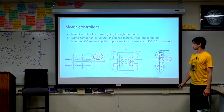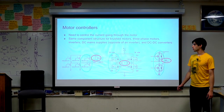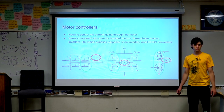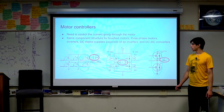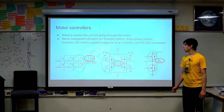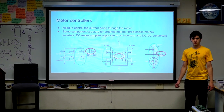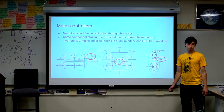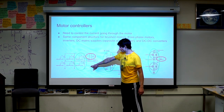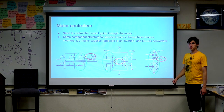Now, motor controllers. The basic idea is you have to control the electricity going through the motor. The same type of controller is used for brushed motors, three-phase brushless motors — like RC hobby stuff that's slowly working its way into FRC — inverters, DC mains power supplies, and DC-DC voltage converters. They're all basically the same piece of electronics. The key similarity is what's called a half bridge: you connect each side of the motor either to power or to ground, and by choosing the configuration you make the motor spin one way, the other way, or somewhere in between.